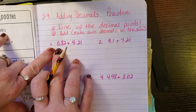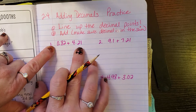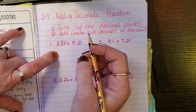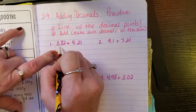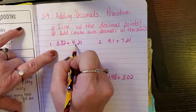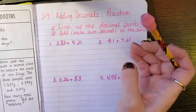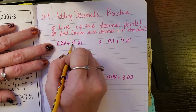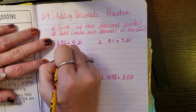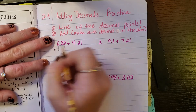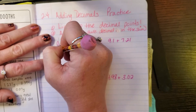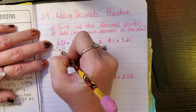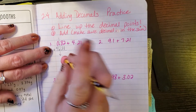The first question is 0.82 plus 4.21. How am I going to write this into a problem with one number on top of the other? Being as though it's addition, these can go in any order — I could put 0.82 on top and 4.21 on the bottom. So I'll rewrite it: 0.82 on top, 4.21 underneath. This is what I mean by lining up the decimals.